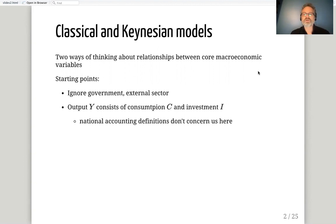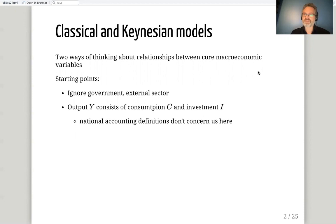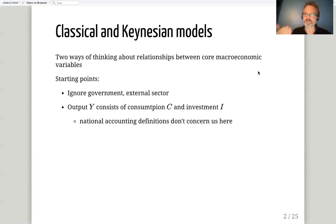We don't need to worry about the exact national accounting definitions of those terms as far as the model is concerned. The important distinction is between consumption — spending carried out by households to meet their immediate needs — and investment — activity carried out by businesses to increase future production. Both the classical and Keynesian visions include households and businesses, though more modern classical versions use a single representative agent.